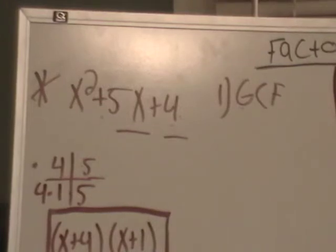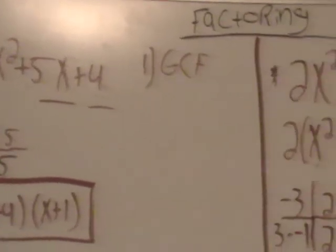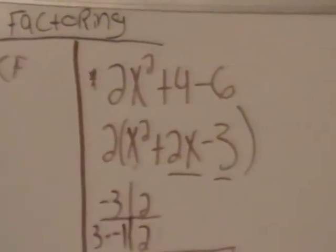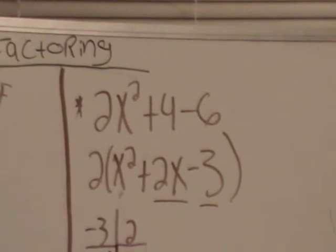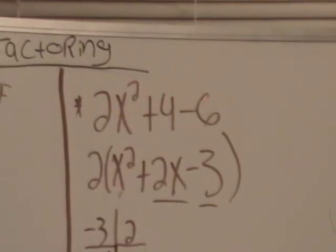But say it wasn't so simple. Say you couldn't just take a 1 out. If you look over here at this example, I have 2x squared plus 4x plus 6. You'll see, you'll notice, again I'm starting with the greatest common factor.